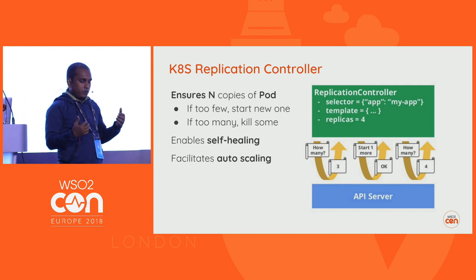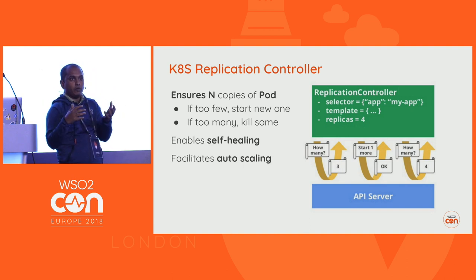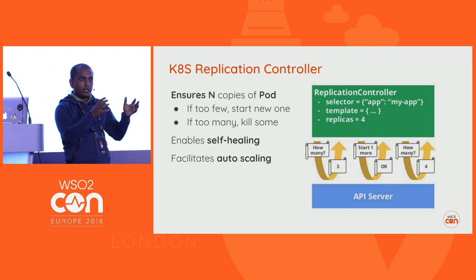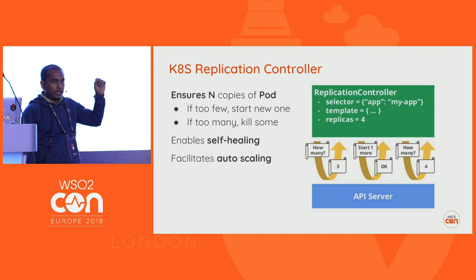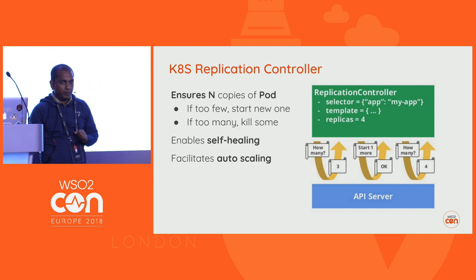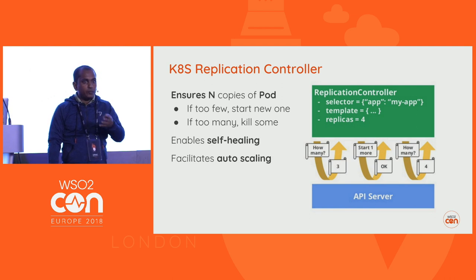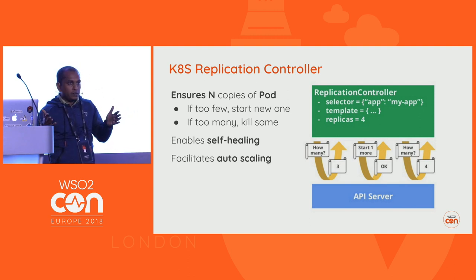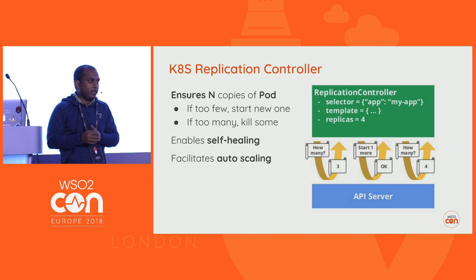Next is the Replication Controller. Since the Pod is the smallest unit, for high availability you need to run at least two Pods. The Replication Controller lets you specify how many replicas — say four — must always be running. If the count drops to three, it automatically spins up another Pod to restore the desired count. This auto-healing capability is very important when managing a large number of containers.